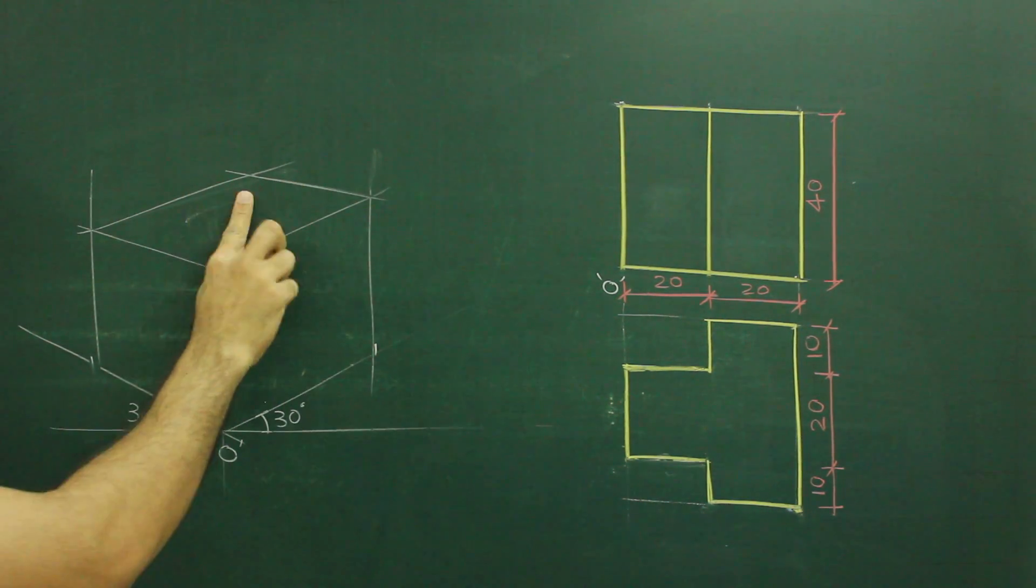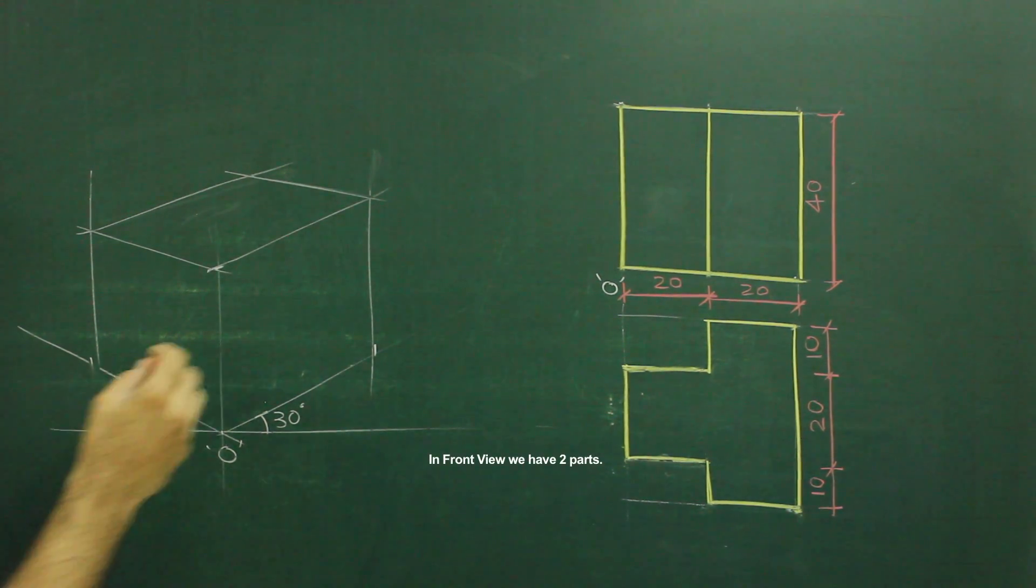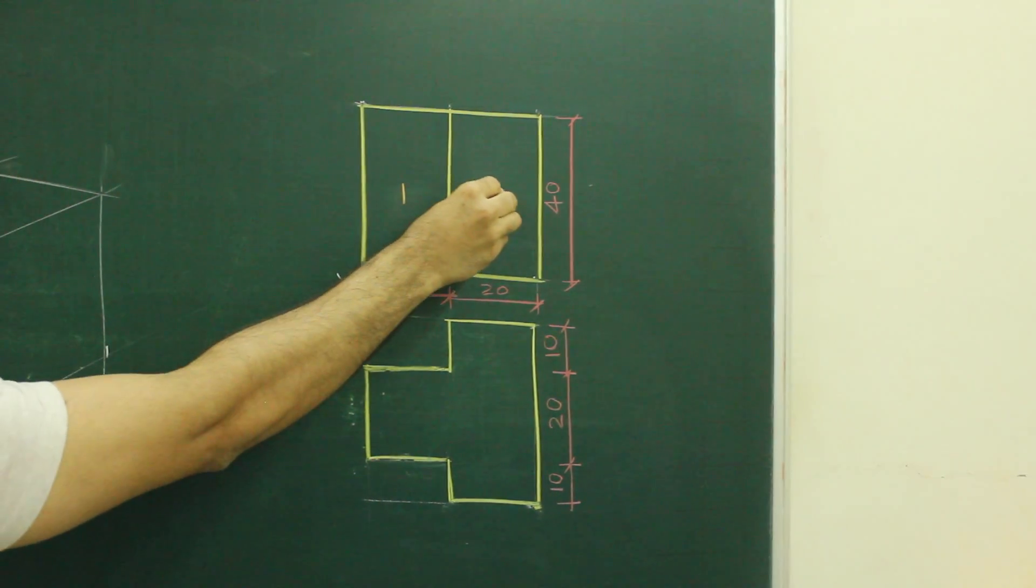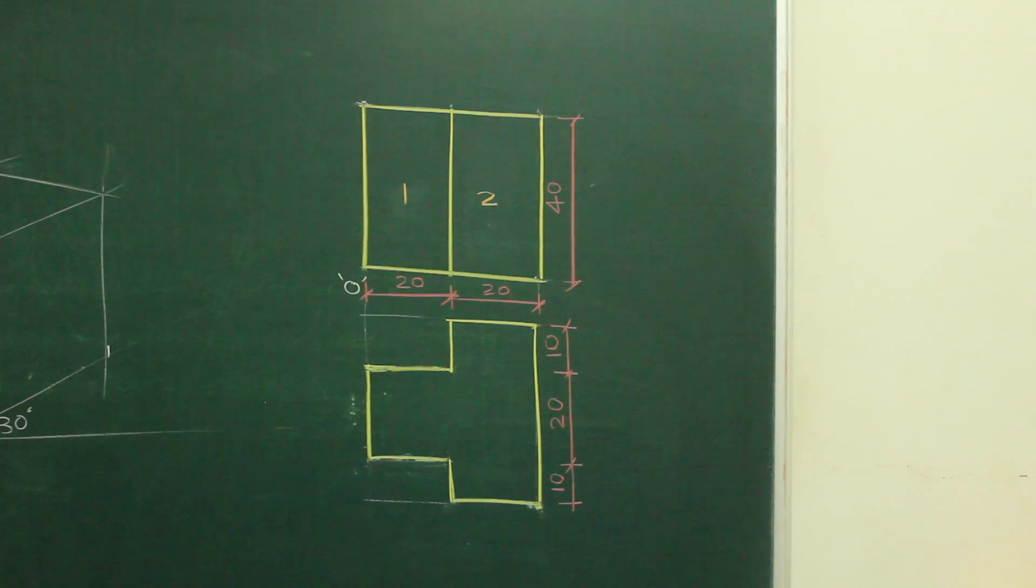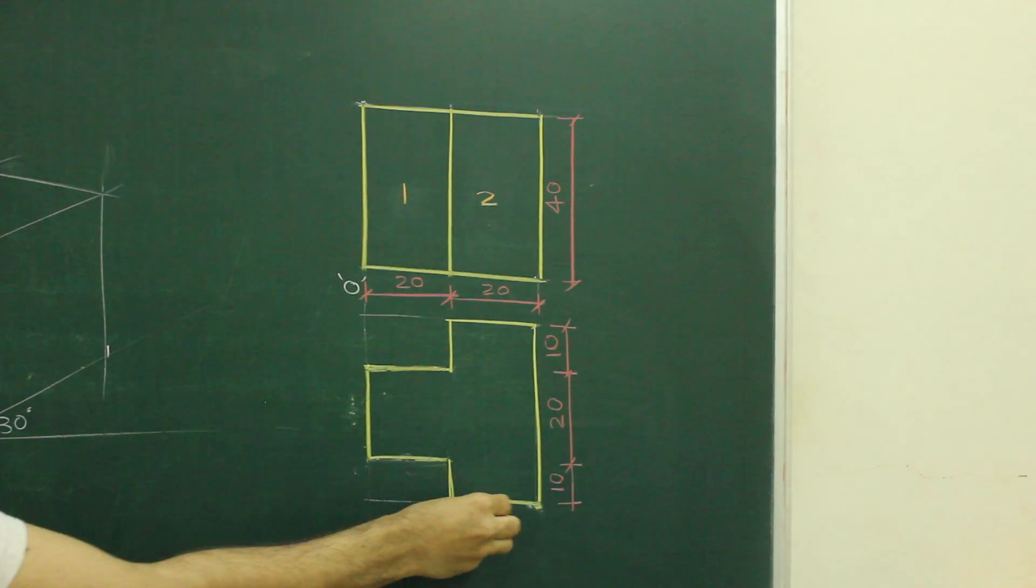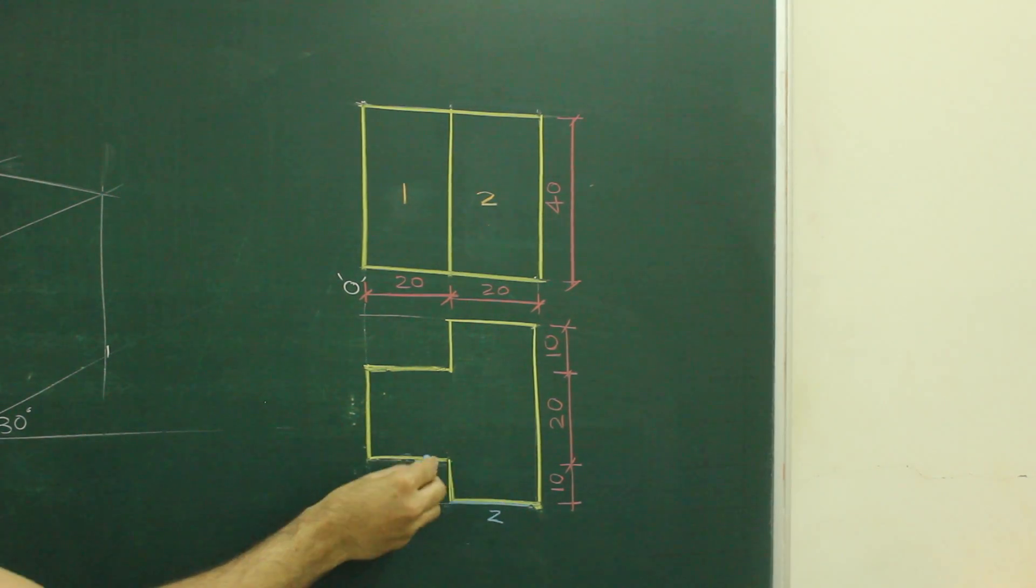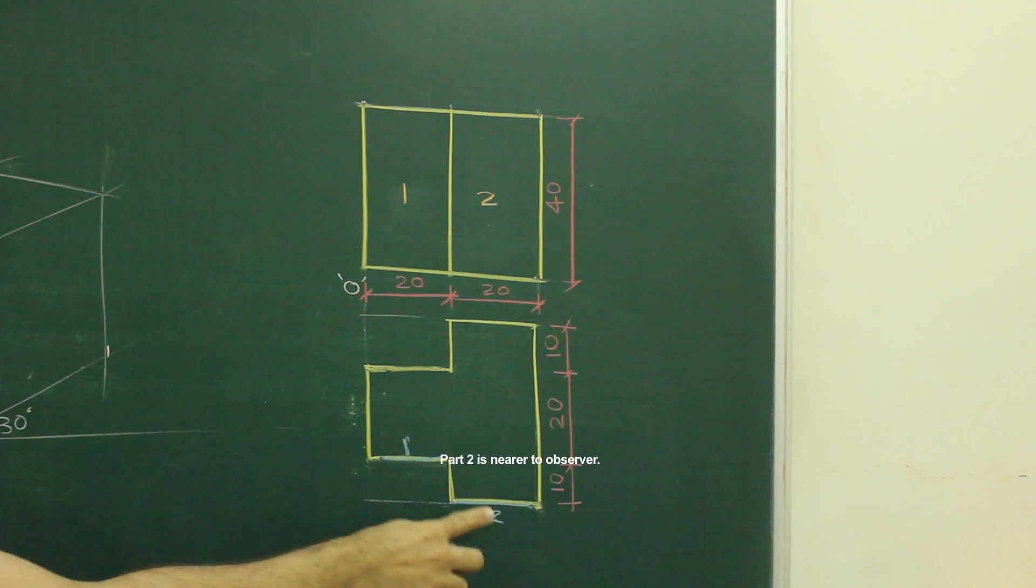Now after drawing this, we will see front view. In front view there are two parts, part 1 and part 2. So out of these two parts, which one is nearer to us or observer? If you see top view, this is part 2 and this is part 1. So we will draw part 2 first.